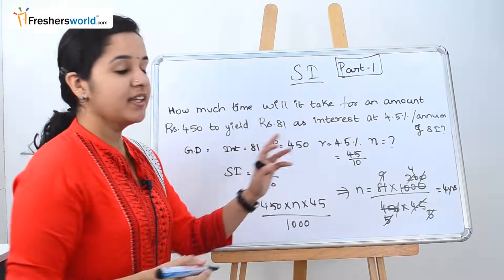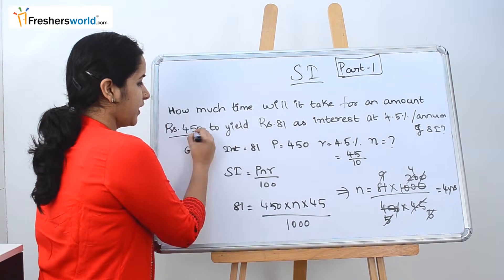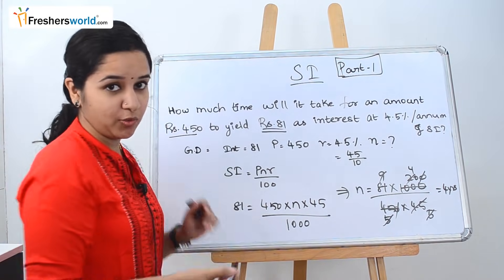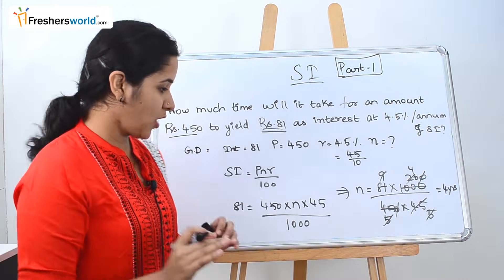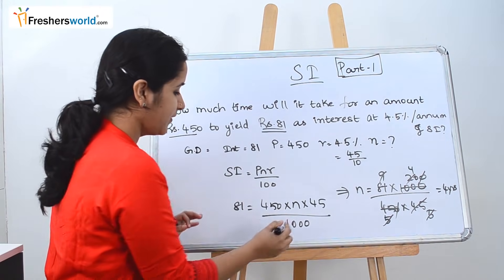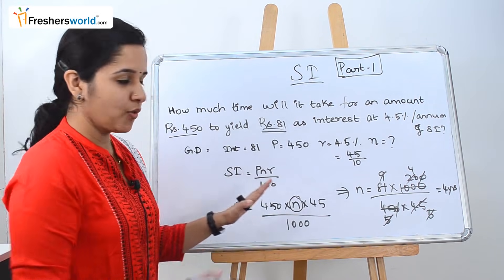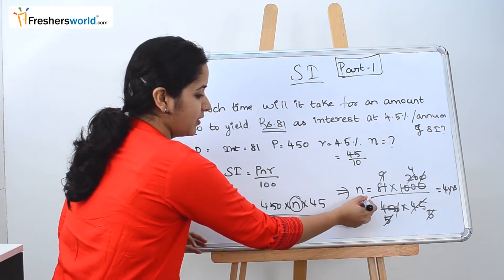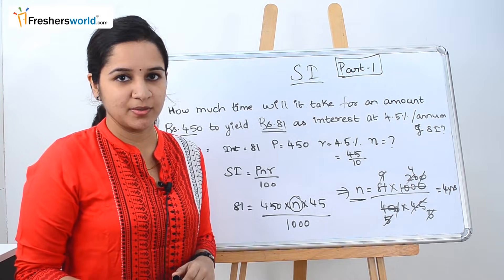So at the end of 4 years, the amount of 450 rupees will yield an interest of 81 rupees at the rate of 4.5%. We had all the data, the unknown was N, so we took all known values to one side and found the unknown.